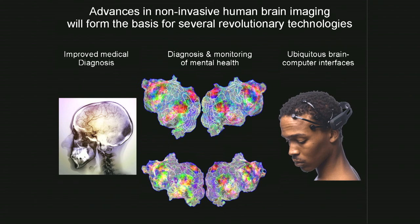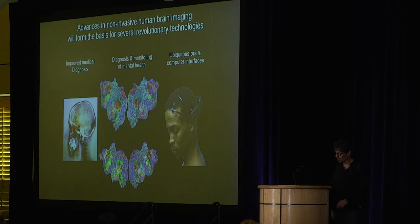In the future, I think these advances in non-invasive brain imaging will lead to three really important things: improved medical devices for diagnosis, things that can be done for diagnosing and monitoring mental health, and eventually all of this will move into civilian society where we'll have essentially ubiquitous brain-computer interfaces continuously reading brain activity. That introduces a whole bunch of interesting ethical issues that I won't talk about in the interest of time, but I'm happy to discuss them at our leisure.